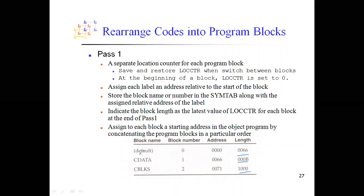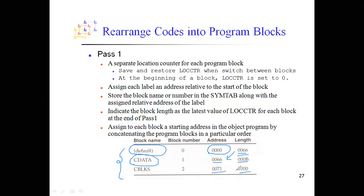Now we know that the default block starts at 0x0000 since it is placed first. Adding the length of default (0x0066) to 0x0000 gives the starting address of the CDATA block relative to the program, which is 0x0066. Adding 0x0066 to 0x000B gives the starting address of CBLKS relative to the program, which is 0x0071. So the blocks' addresses relative to the program are: default at 0x0000, CDATA at 0x0066, and CBLKS at 0x0071.